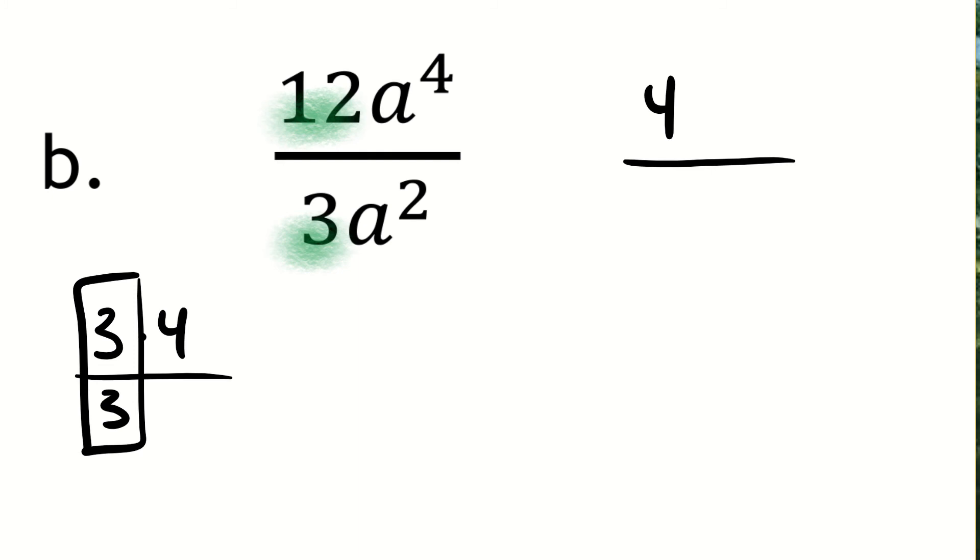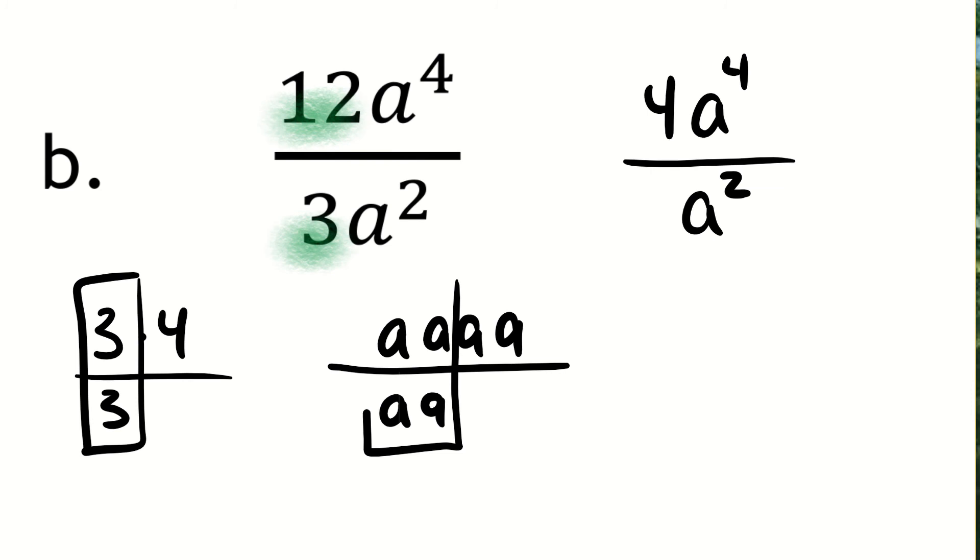In my numerator, I have 4 factors of a, and in the denominator, there are 2 factors of a. If I write that out, 4 factors of a in the top—1, 2, 3, 4—and 2 factors of a in the denominator, I can see that I have exactly 2 factors of a left over in the numerator.